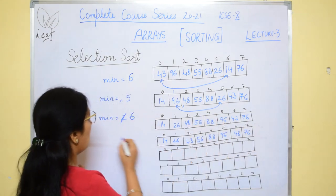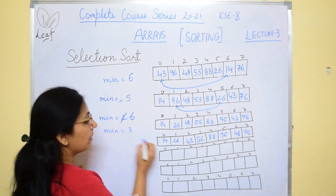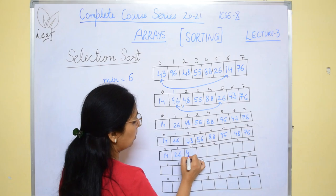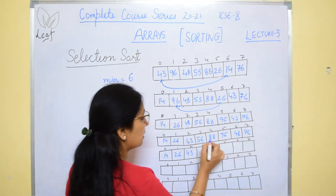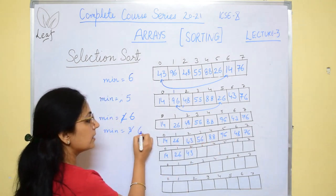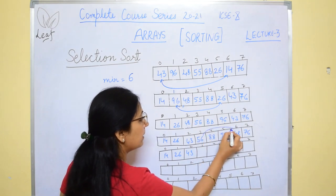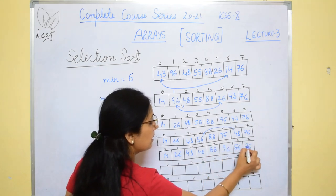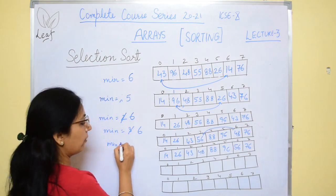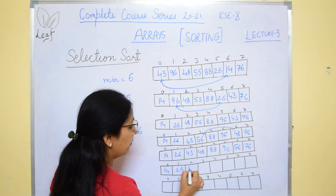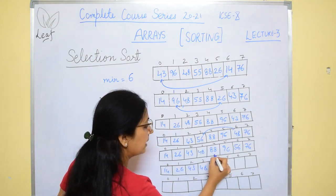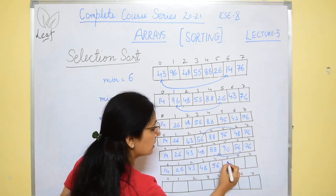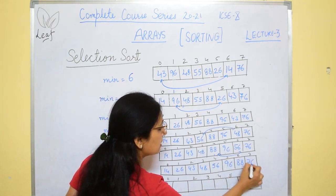Rest values remain the same: 88, 96, 76. Now minimum variable takes the value 3. Starting values are written as they are. 56 and 88 — no change; no change; no change. Now the min variable becomes 6. So these two values will be interchanged: it will be 48 at one position and 56 at another; 88, 96, 76. Then minimum takes 4, and we compare: 88 and 96 — no change; 56 — no change there either. Now 56, 96, 88, 76 — like this it will be done.